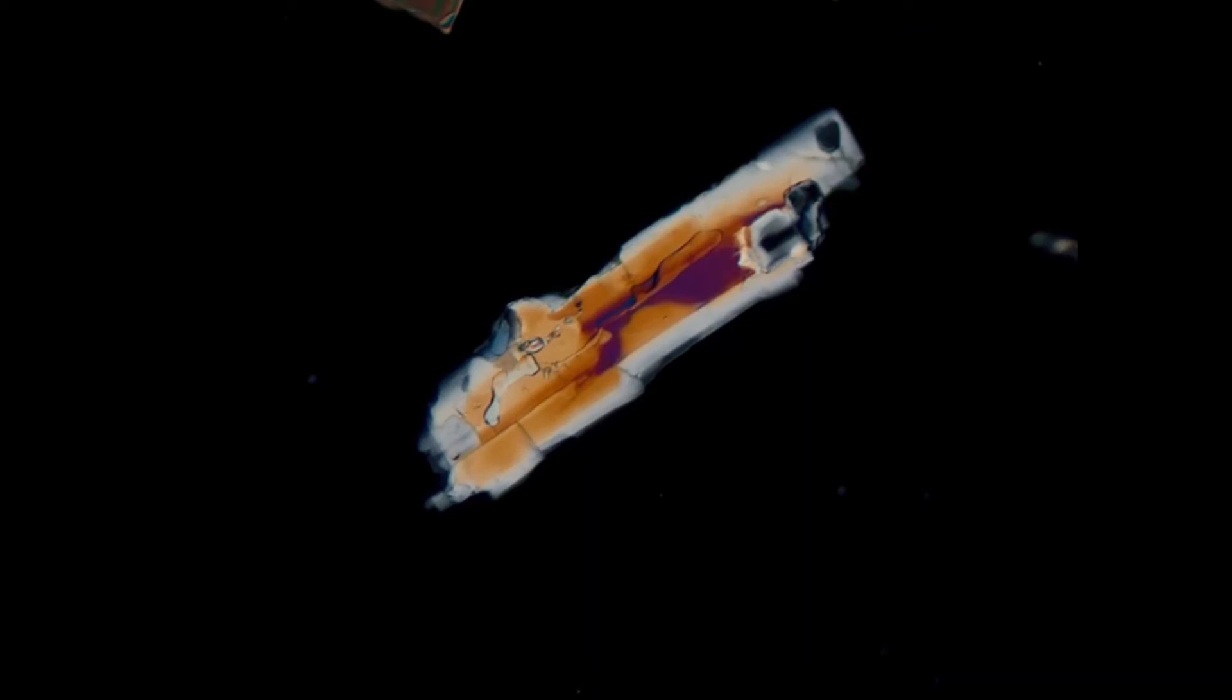If we look at the grain under cross-polarized light, we can see interference colors of the first and second order, depending on the thickness. On the rim where it's thinner, we see first order white and gray. In the center where it's thicker, they range up to the blue of the second order.